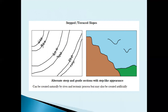Terracing is one of the methods used to prevent soil erosion along a slope. When the slope is transformed into a series of steps, it slows down the rate of overland flow, and therefore slows down the rate of soil erosion.